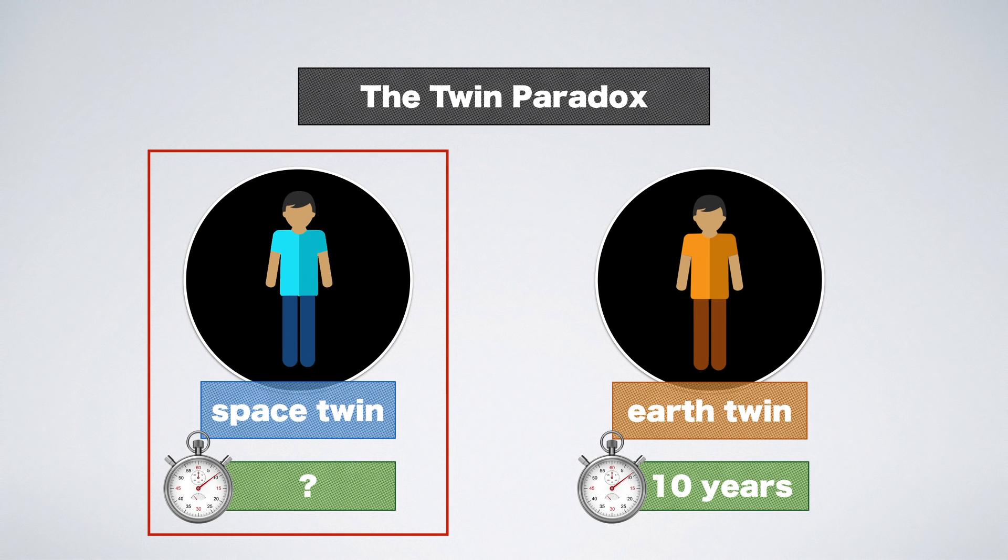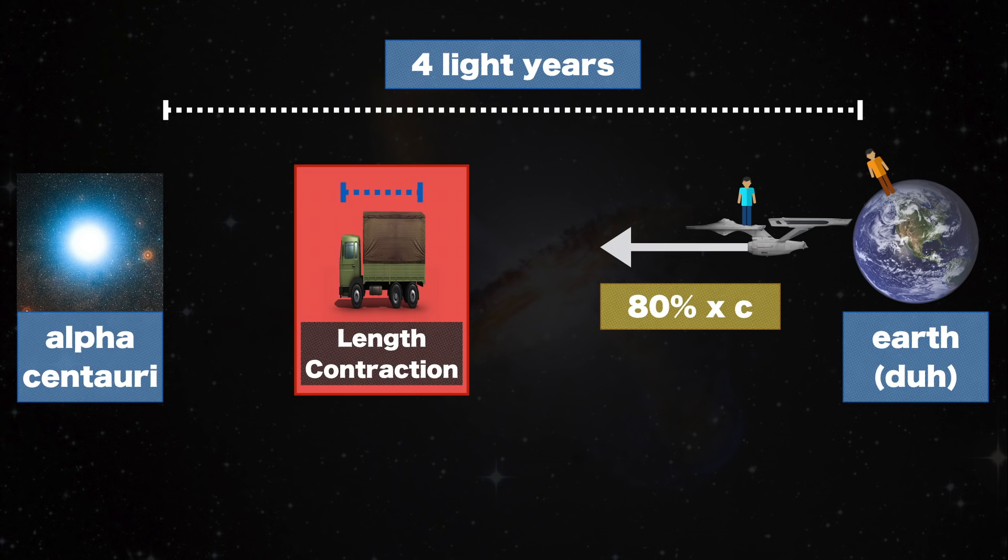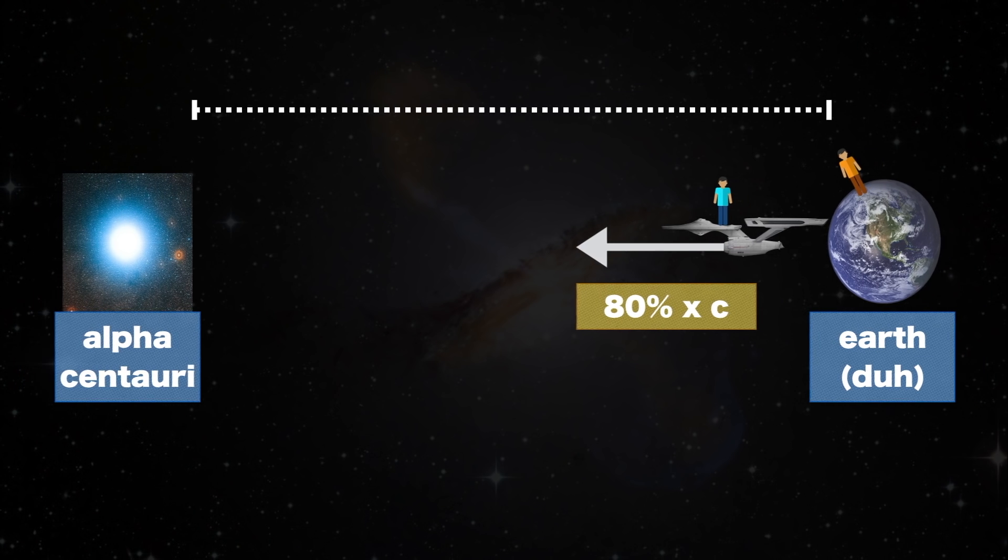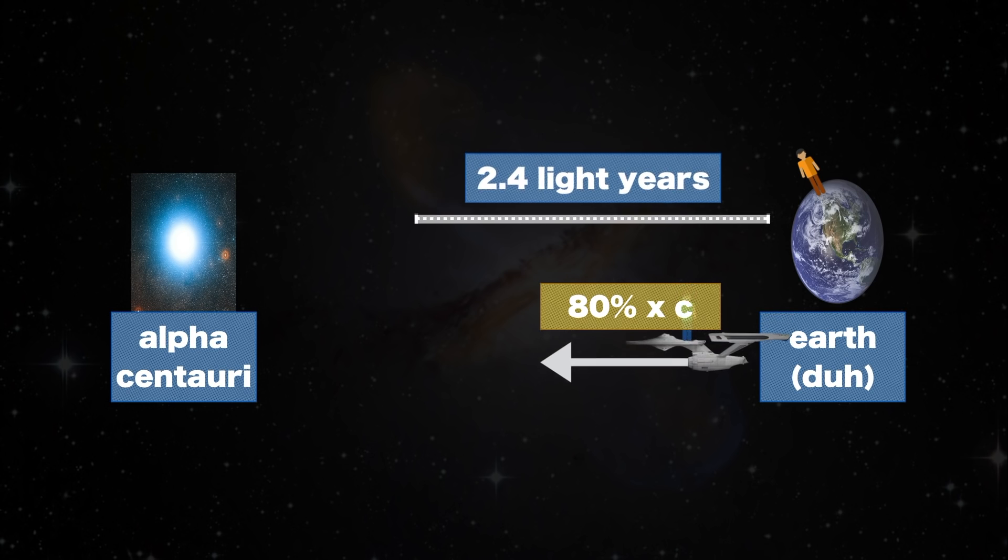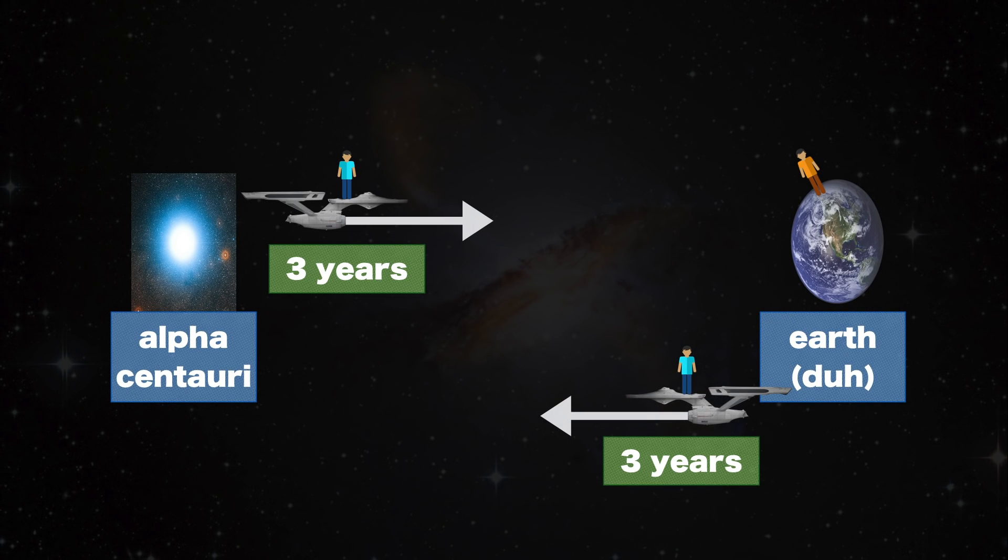Space Twin, on the other hand, experiences the following. Because of length contraction, the entire distance he travels shortens to only 2.4 light years. This results in three years of travel each way.